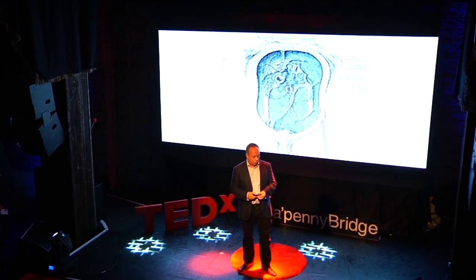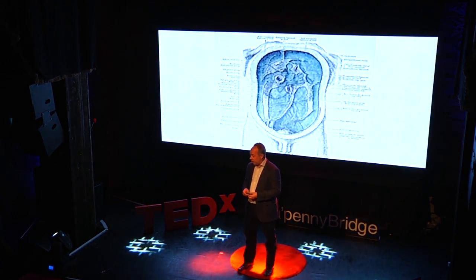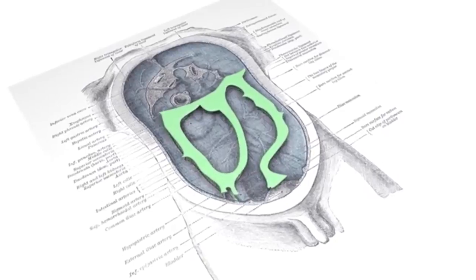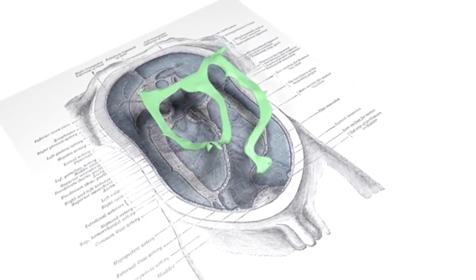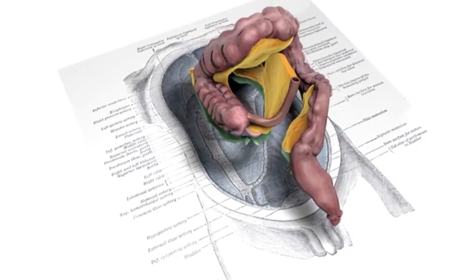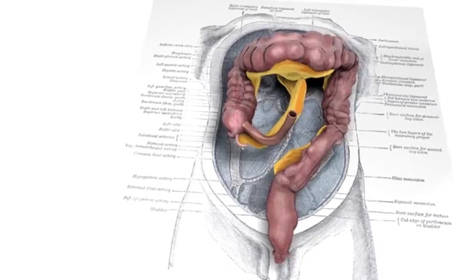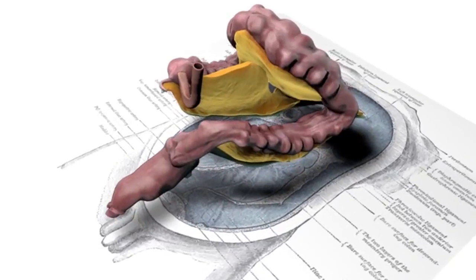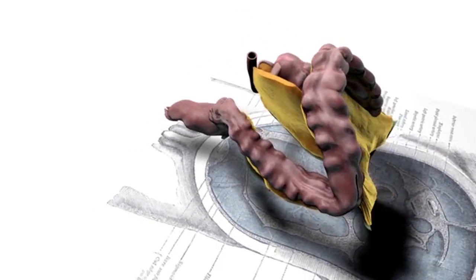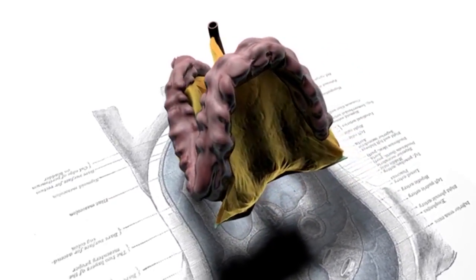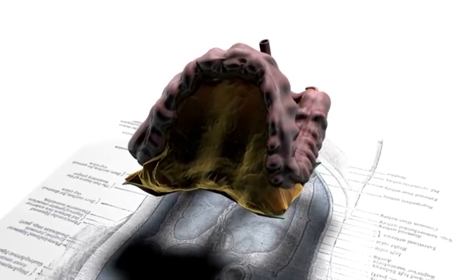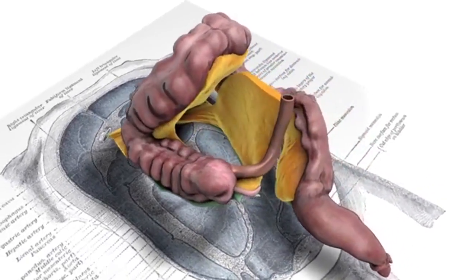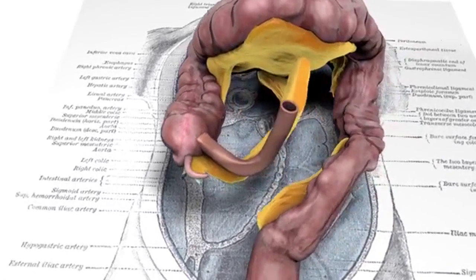This animation shows the understanding — the teaching — that we have had of the mesentery. You'll see the intestine come in, and the mesentery in yellow. There are two really important points: first, according to this model there are multiple mesenteries — it's a complex model, not quite how nature generally does things. The other thing you'll notice is that on the right side and on the left side, there's no mesentery, according to this particular model.